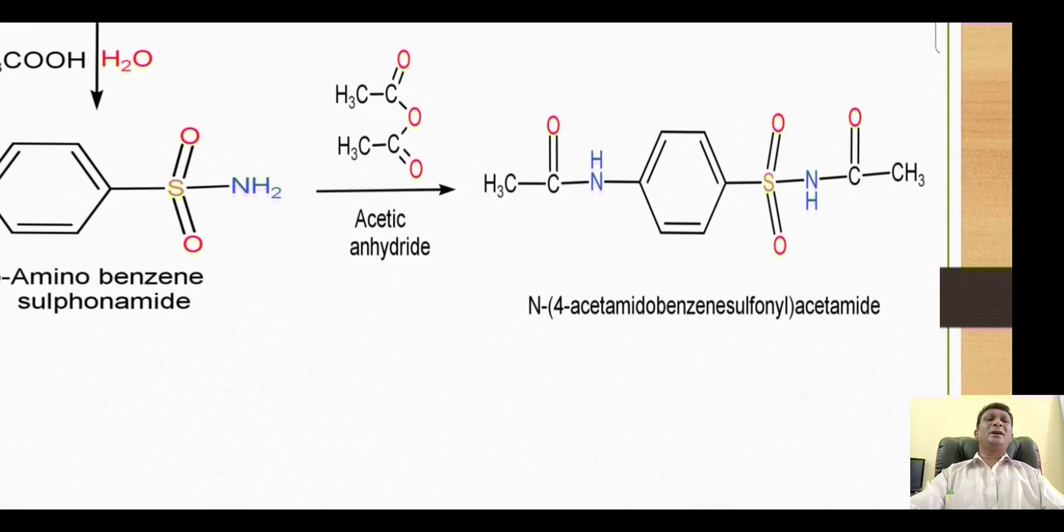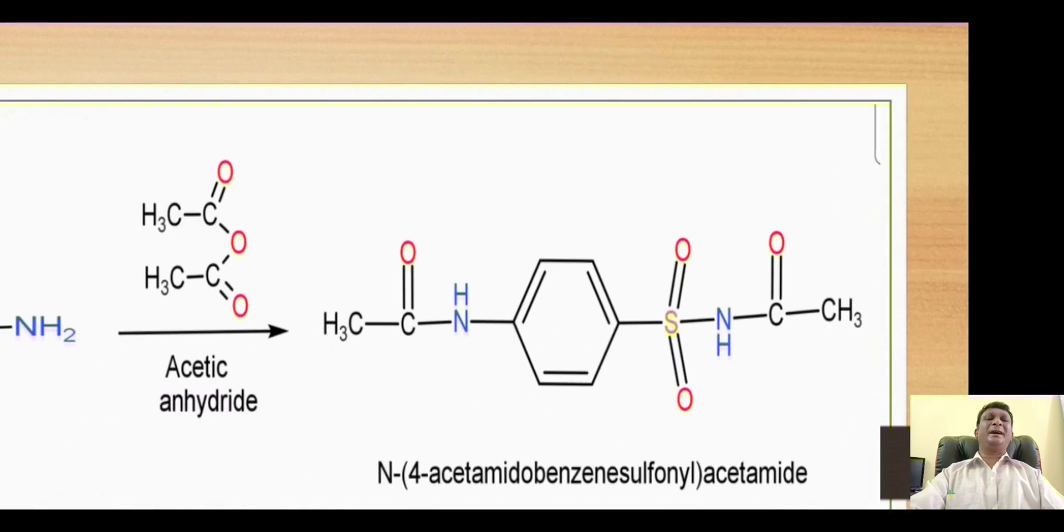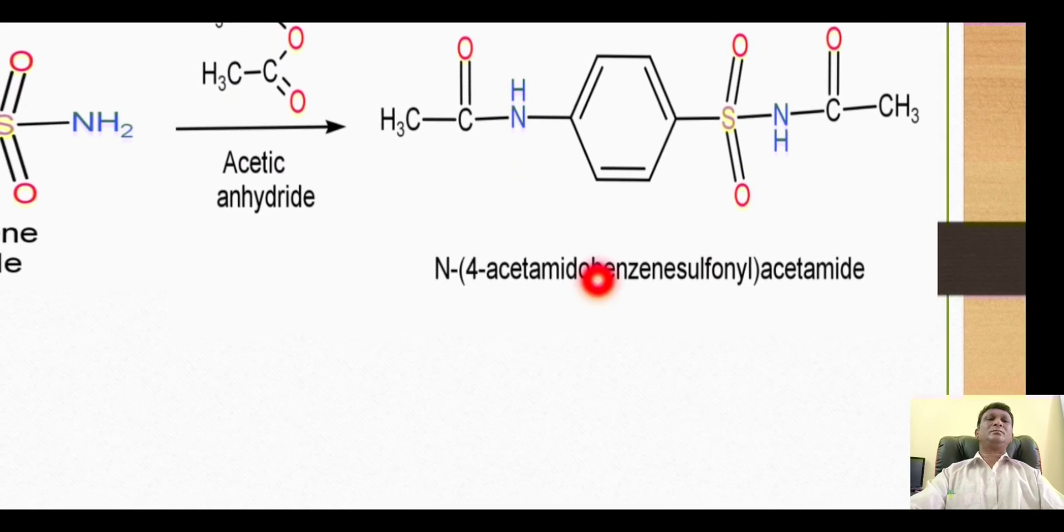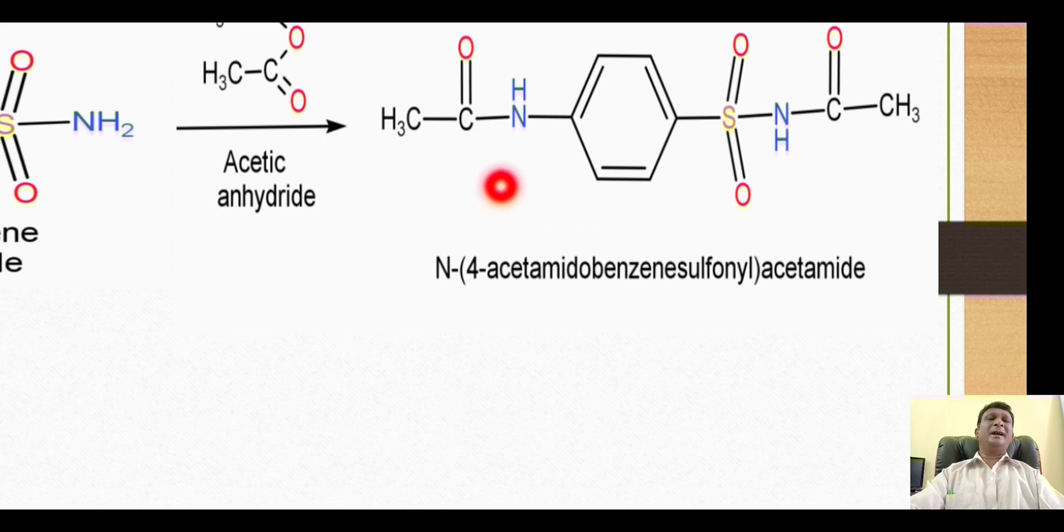This gives formation of a diacetyl derivative. Here you can find that the acetyl group is introduced on this amino group and on the nitrogen of the sulfonamide.